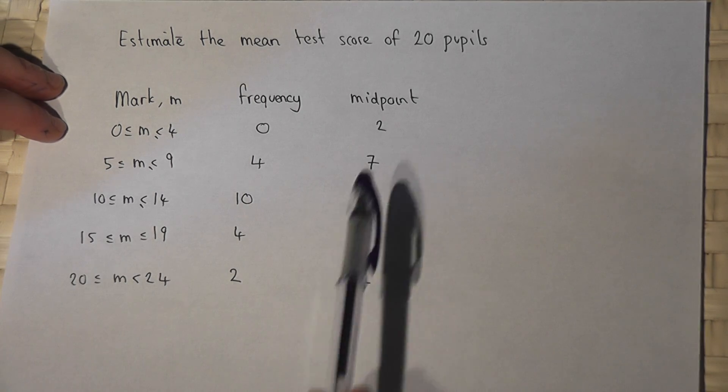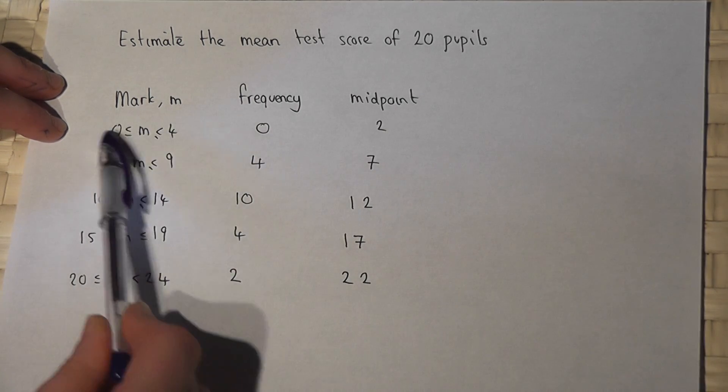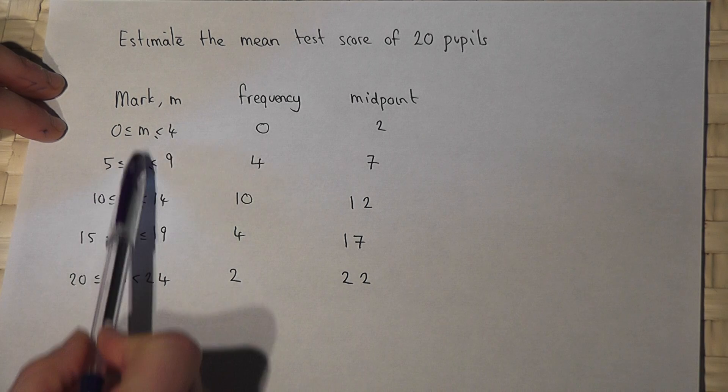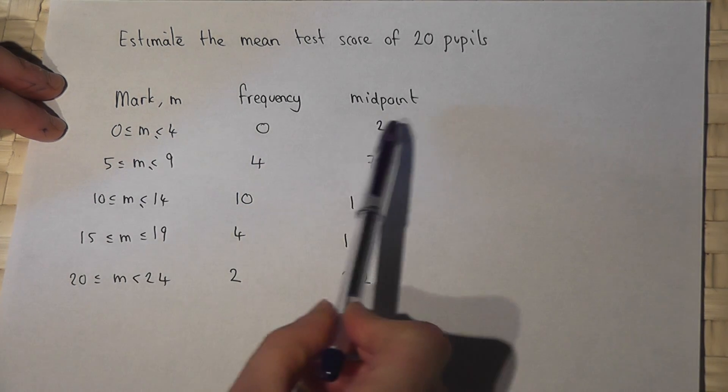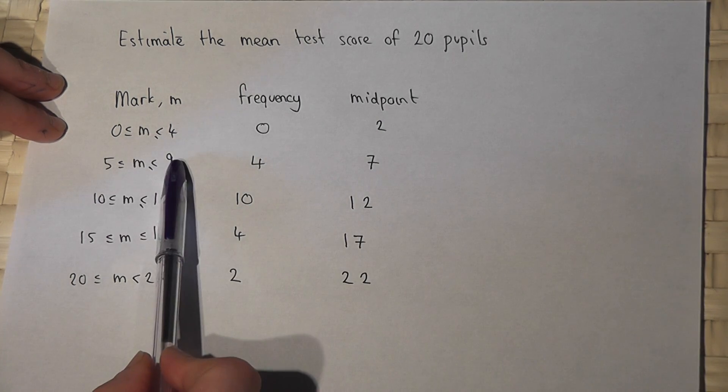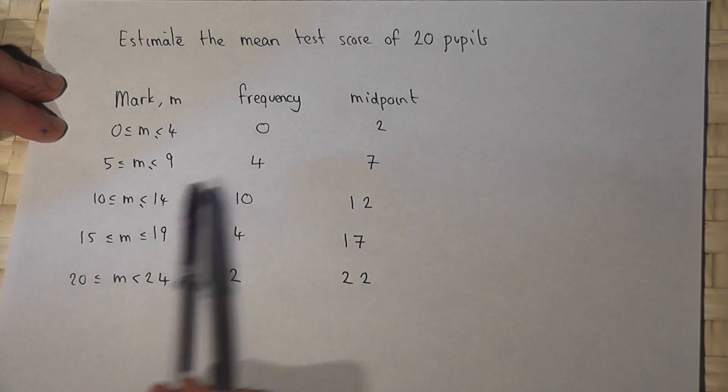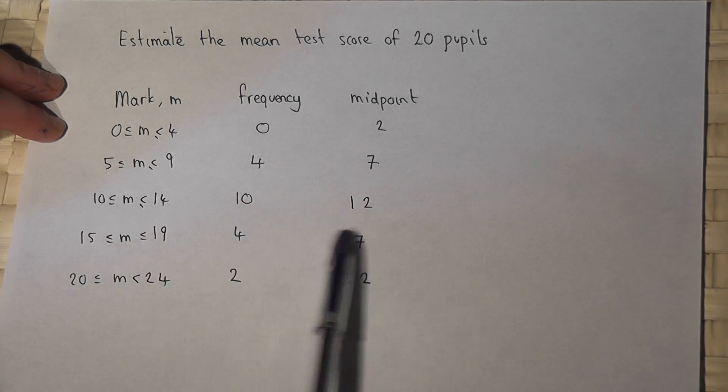We take the midpoint of all the groups. Between zero and four we call those scores two, between five and nine we call those scores seven, ten to fourteen is twelve, and so on.